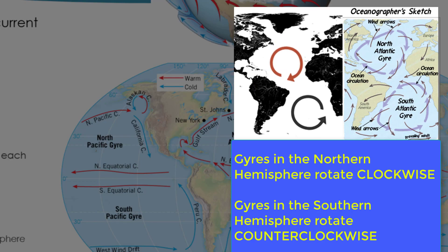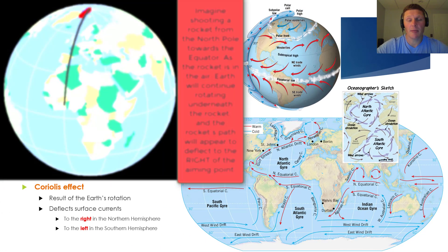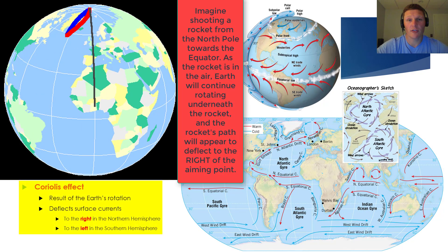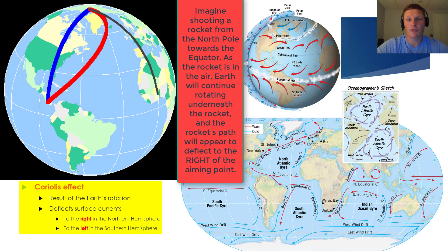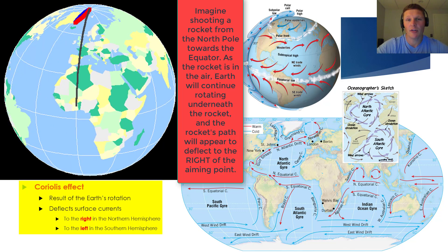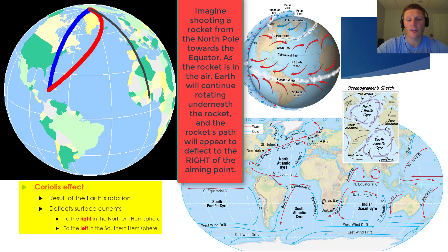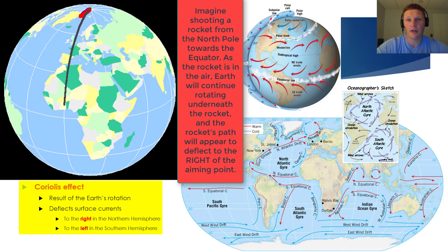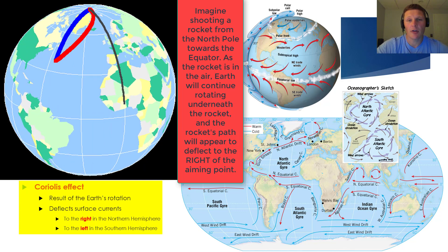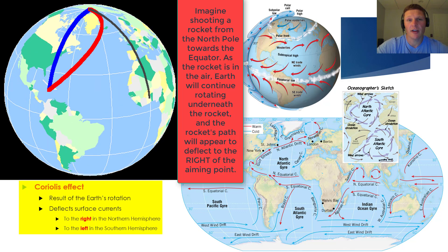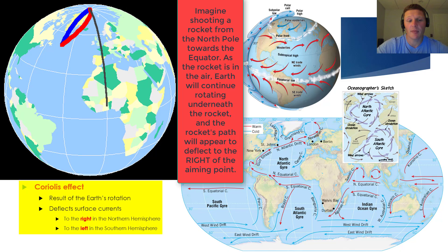Why do gyres flow in different directions in the two hemispheres? This phenomenon can be explained by the Coriolis effect, which is a result of Earth's rotation. I'll explain the Coriolis effect in much greater detail in a future vodcast when we talk about atmospheric circulation. But for now, it's important to note that the Coriolis effect deflects surface currents to the right in the northern hemisphere and to the left in the southern hemisphere. By the same token, the Coriolis effect deflects prevailing winds to the right in the northern hemisphere and to the left in the southern hemisphere.